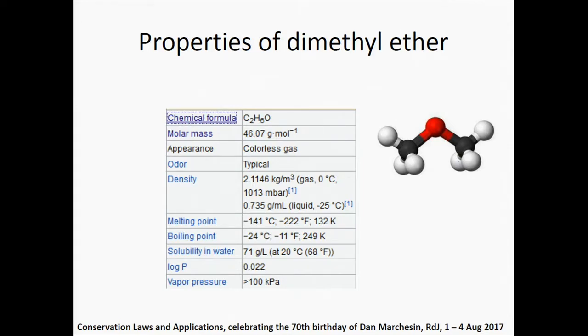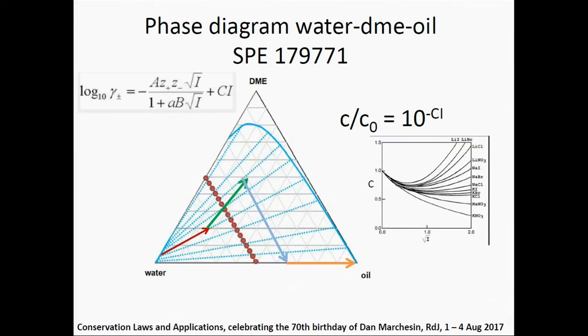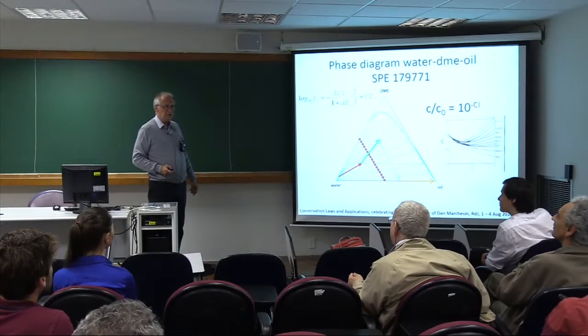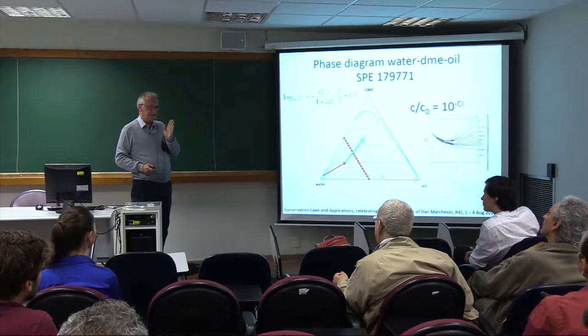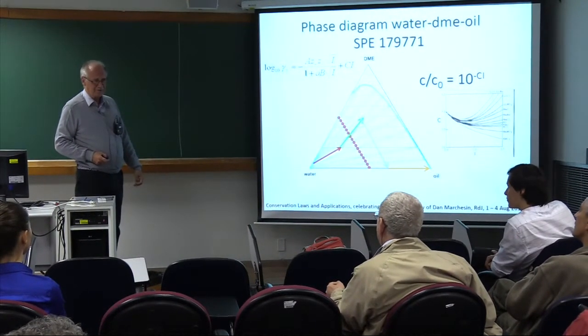So this is dimethyl ether (DME). As a chemist, the structural formula gives me a happy feeling: you have here an oxygen and two CH₃ groups attached to it — that is dimethyl ether. It has a certain molecular mass and a lot of other properties. The important thing is that it is soluble in water. But more importantly, you want it to be better soluble in the oil than in the water, and there is a distribution equilibrium — a partition equilibrium — between DME in the oil and DME in the aqueous phase.